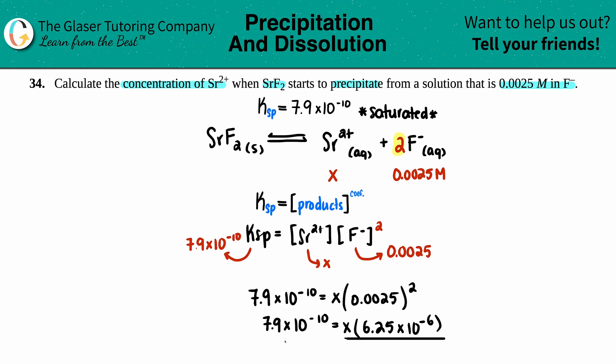And now I'm just going to divide each side by 6.25 times 10 to the negative 6th. Okay, this cancels out. Now let's get our x value. x equals 7.9 times 10 to the negative 10th divided by that answer. And if we do two sig figs, I get 1.3 times 10 to the negative 4th molarity.